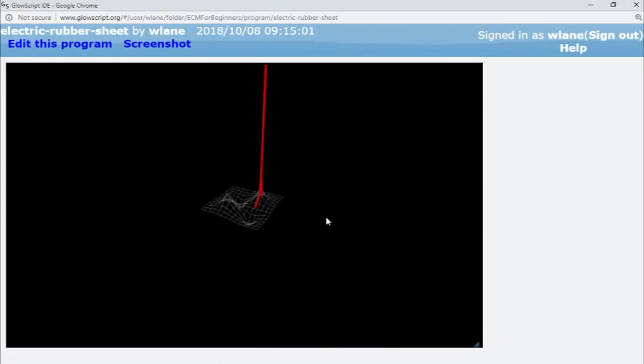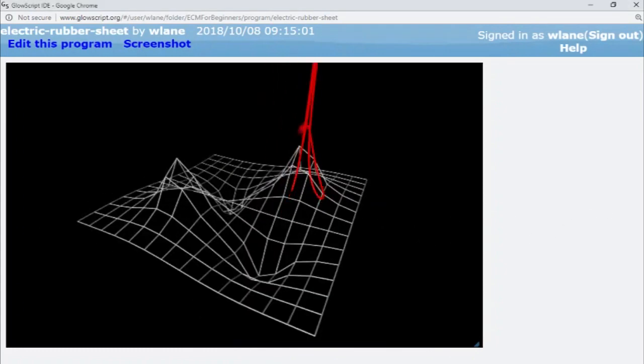However, if we make our moving particle negatively charged, like an electron, it moves toward hills and away from valleys.